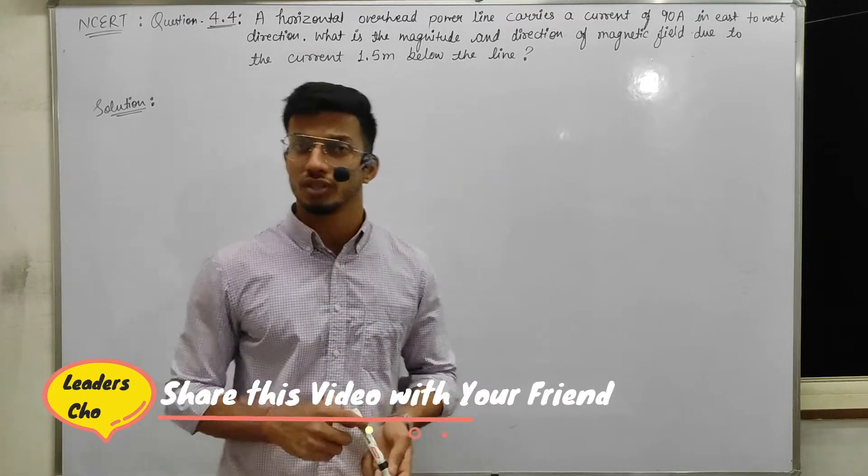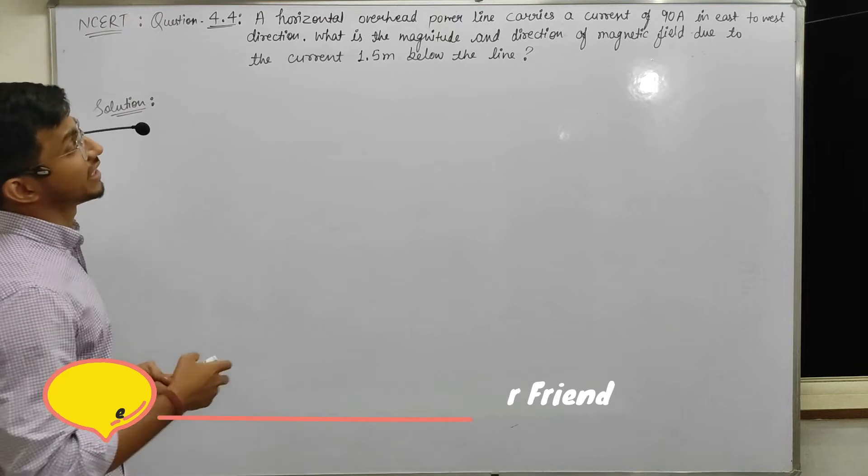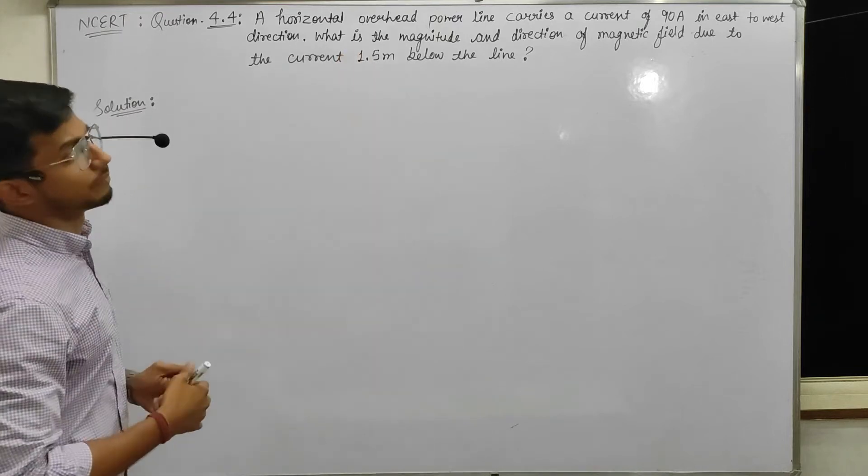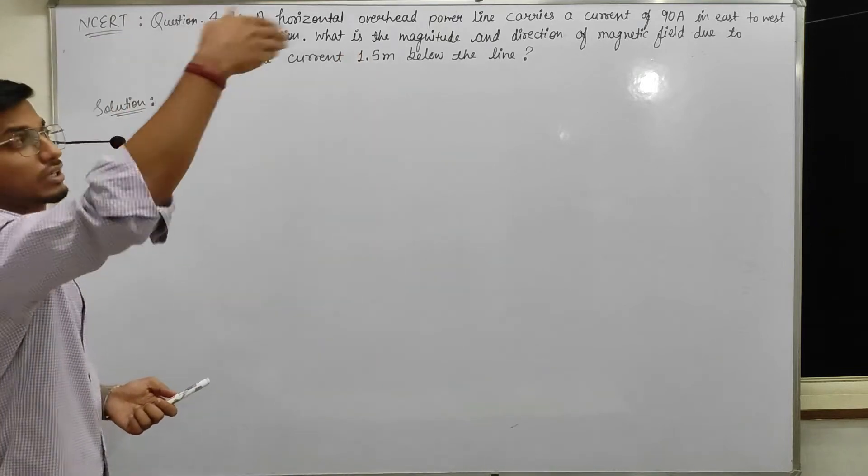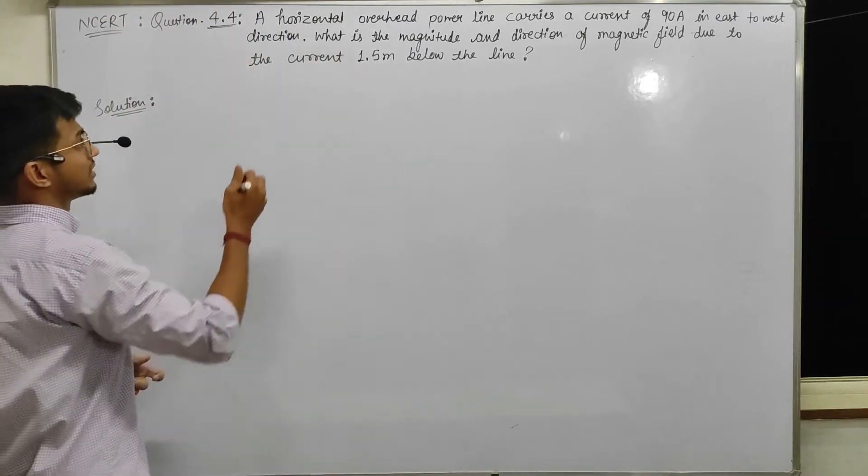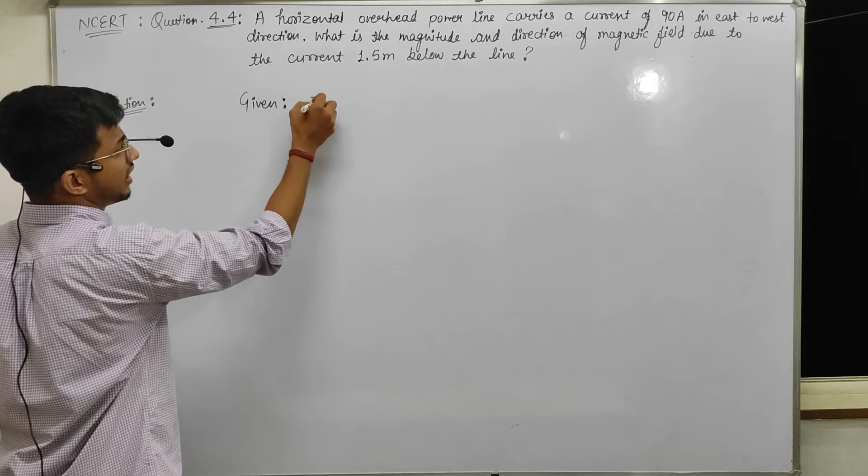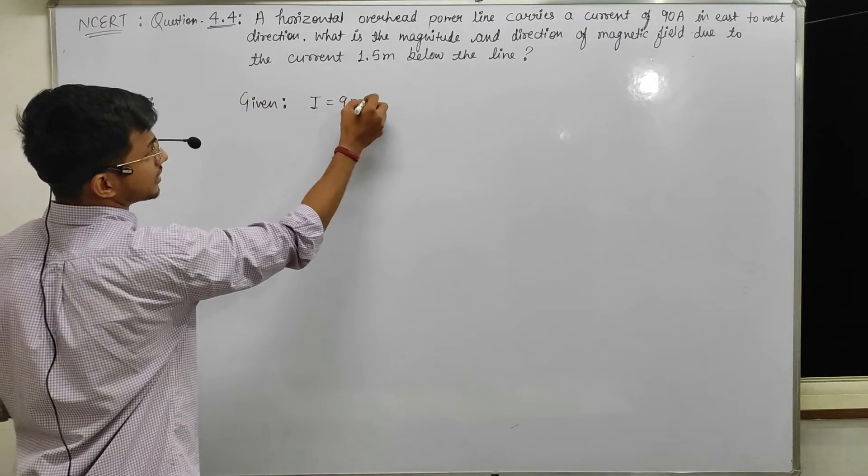In this video we will do question number 4.4. Question 4.4 is saying that it is a horizontal overhead power line carrying current. It is very heavy current, 90 ampere.